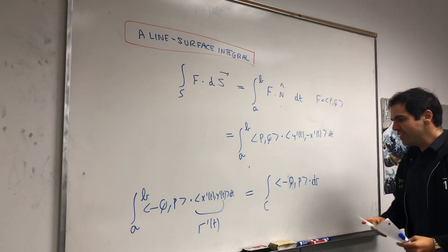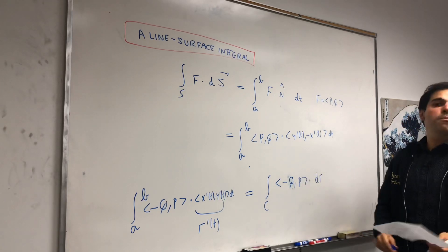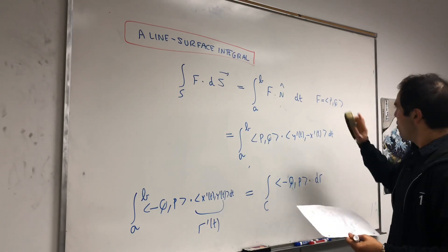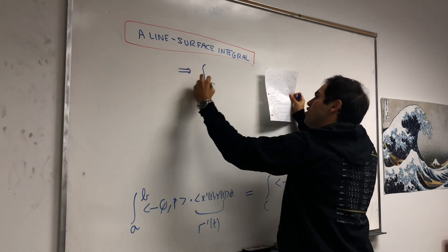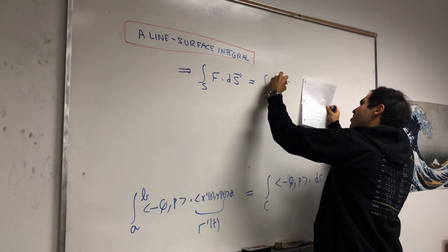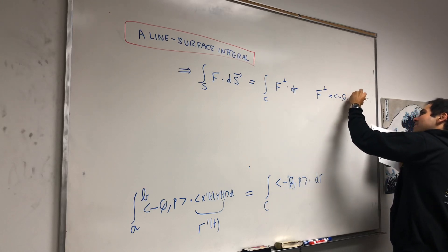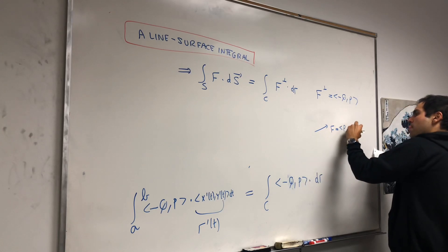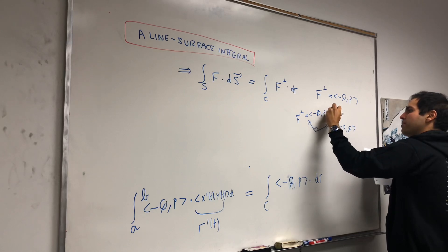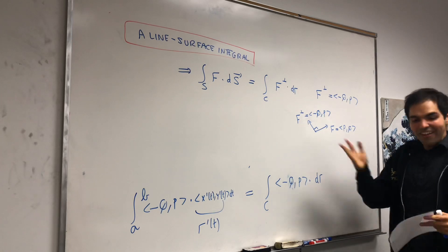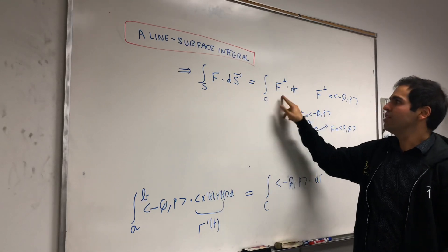In other words, we've shown that this 1D surface integral of F equals the line integral of this rotated vector field — which I like to call F⊥. So the result is: the surface integral F·dS is just the line integral of F⊥·dr, where F⊥ = (-Q, P). It's kind of neat: if F = (P, Q), then F⊥ is indeed orthogonal — it's an orthogonal vector field.